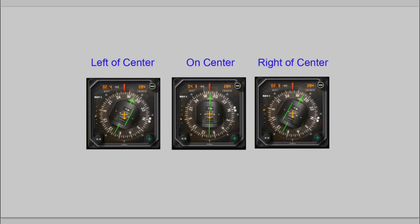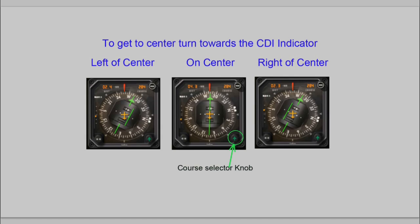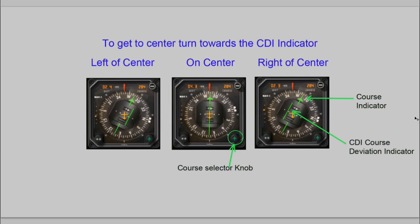Another system you may have is the HSI — Horizontal Situation Indicator. You set your course to the heading you want to fly on your approach. For San Francisco 28 Right that would be 283 degrees, so you turn the knob and point the course indicator to 283. The CDI needle is the center portion — deflected to the left means we are too far right, deflected to the right means we're too far left. To get back on course, turn towards the CDI indicator.